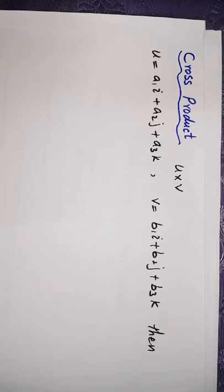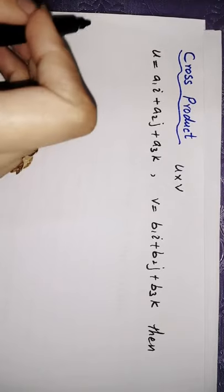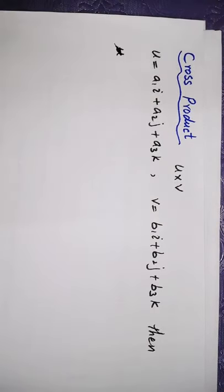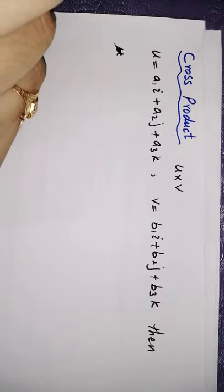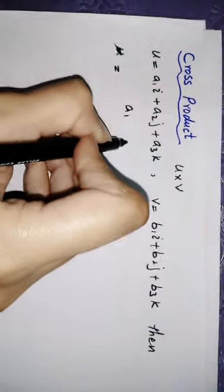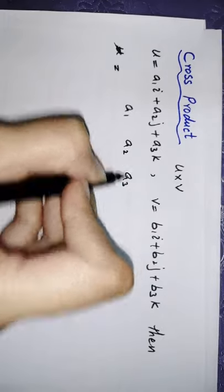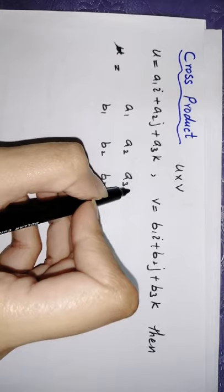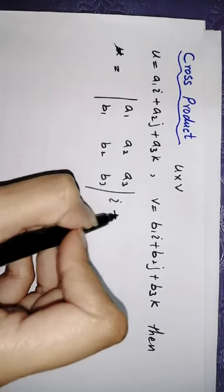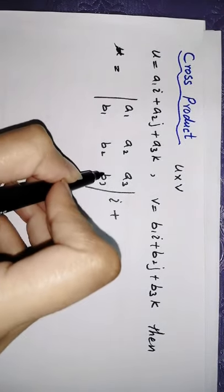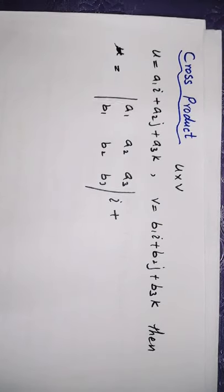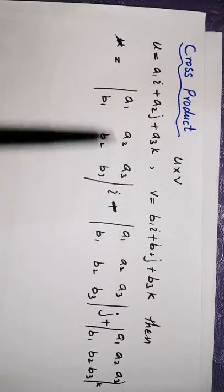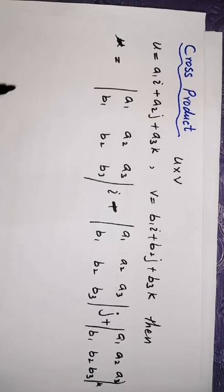If we find the cross product of this type of vector, we write it in a rectangular array: first row i, j, k; second row a1, a2, a3; third row b1, b2, b3. Its determinant gives the i component, the j component, and the k component. For the i component we cover the first column, for j we cover the second column with a negative sign, and for k we cover the third column.